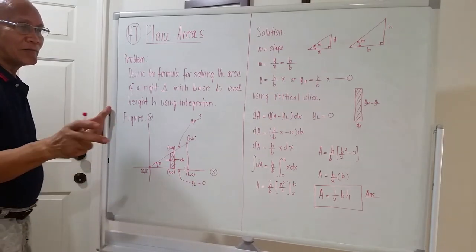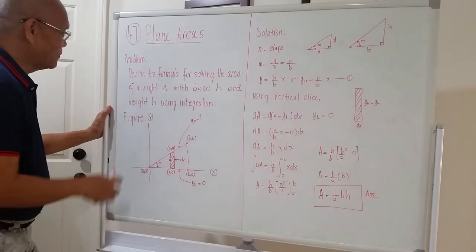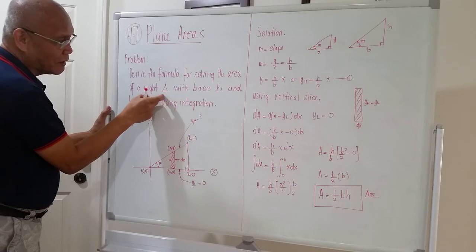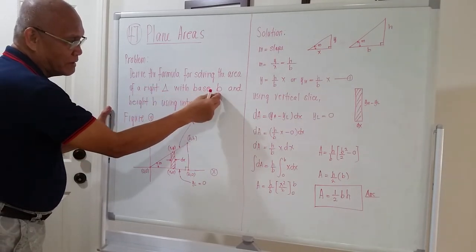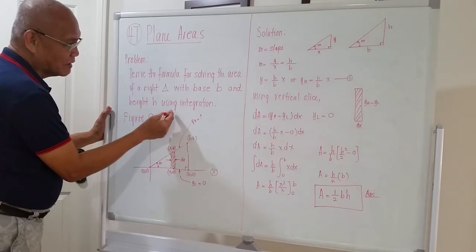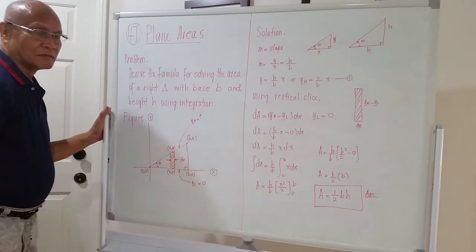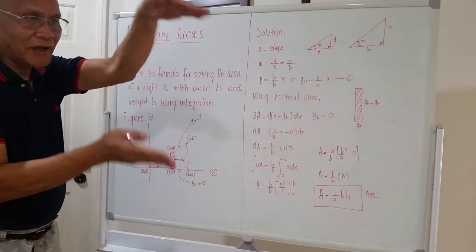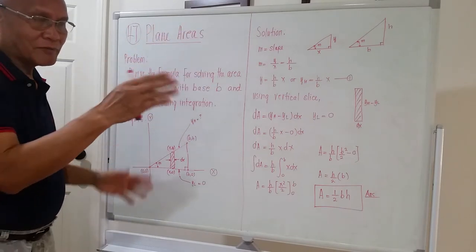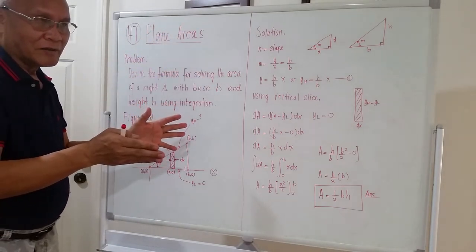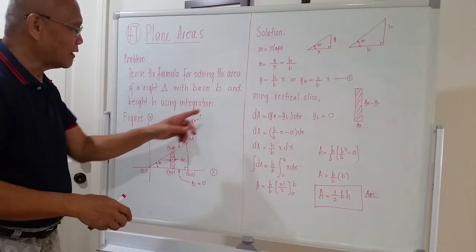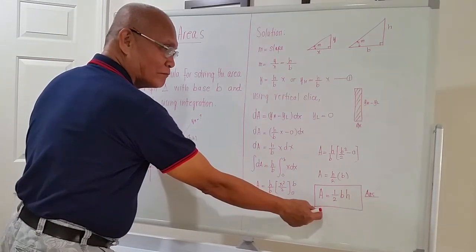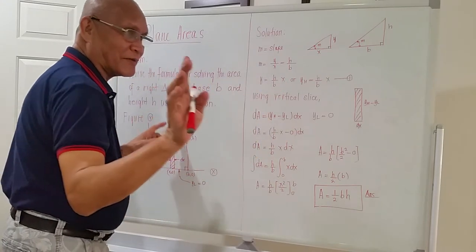I will read the problem: derive the formula for solving the area of the right triangle with base b and height h using integration. We are supposed to be given a right triangle with base b and height h, and we will derive the area in order to compute given the value of the base and the value of the height. Actually, this formula emanates from integral calculus.